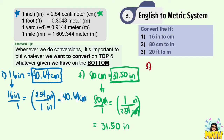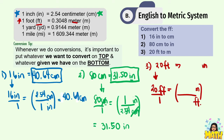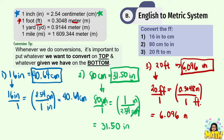Number 3: convert 20 feet to meters. Using the conversion 1 foot equals 0.3048 meters: 20 times 0.3048 gives us 6.096 meters. Therefore, 20 feet equals 6.096 meters.